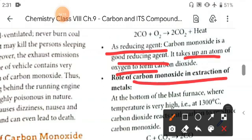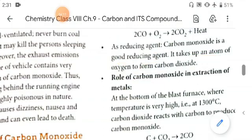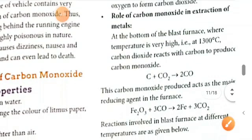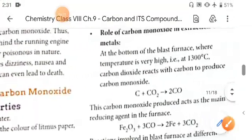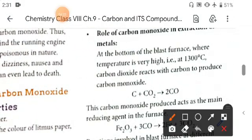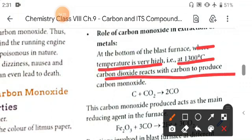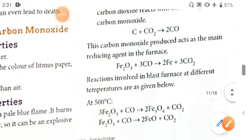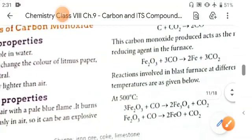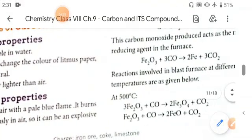Role of carbon monoxide in extraction of metals. This is a very important process. At the bottom of the blast furnace, where temperature is very high, that is 1300 degrees centigrade, the carbon dioxide reacts with carbon to produce carbon monoxide. This carbon monoxide produced acts as the main reducing agent in the furnace.